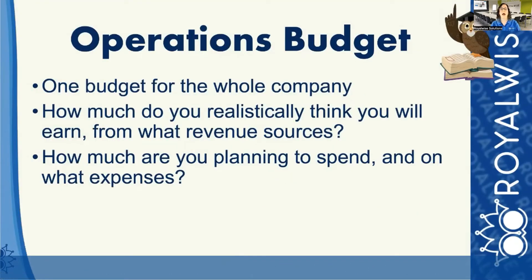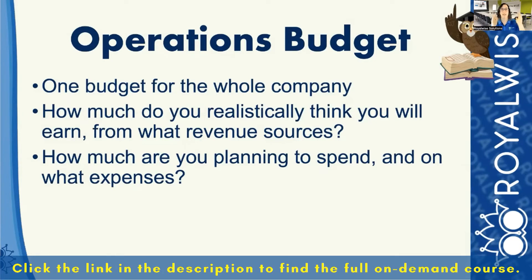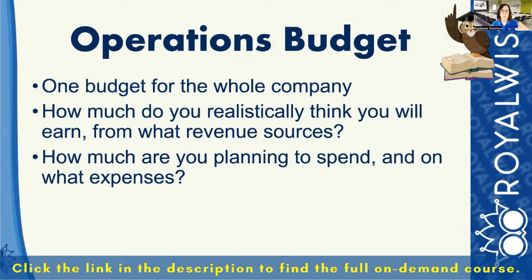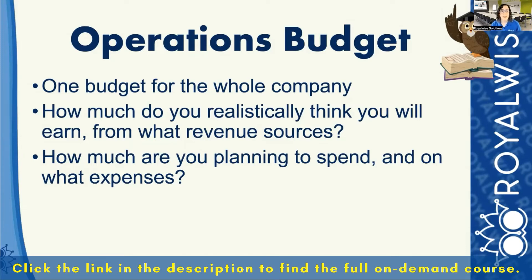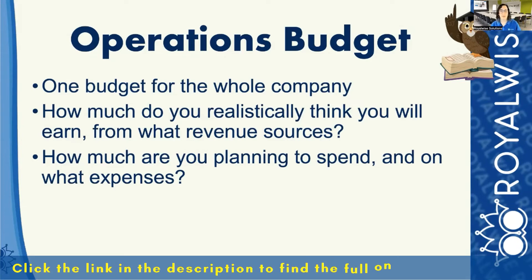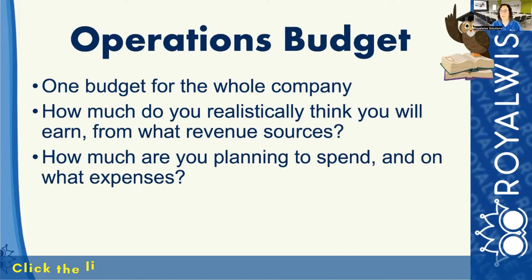The first type is your operations budget — that's your budget for the whole entire year for the whole company. It's basically looking at your profit and loss report and being proactive, allocating what you want your ideal P&L to look like by the end of the year. You take a look at all the different income streams and all of the different expenses, try to be realistic about what you're going to earn, what revenue sources they're coming from, and then how you're going to allocate that money and what you're planning to spend. That way you have a roadmap for the year.